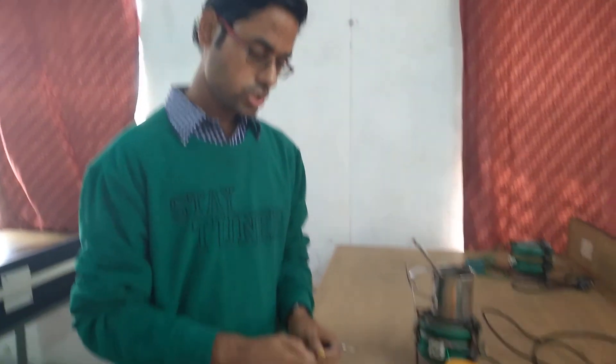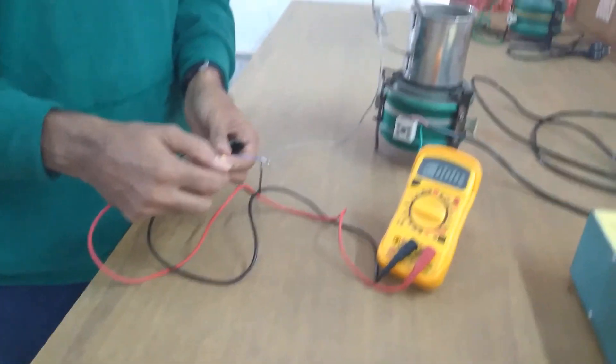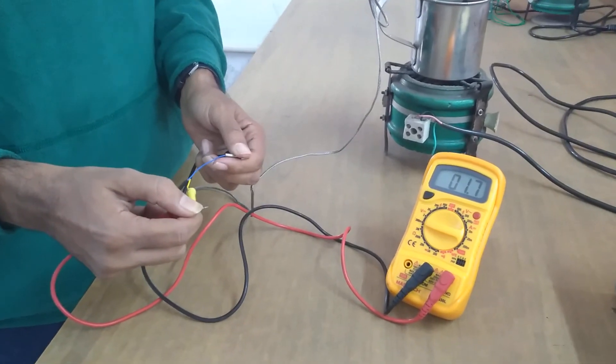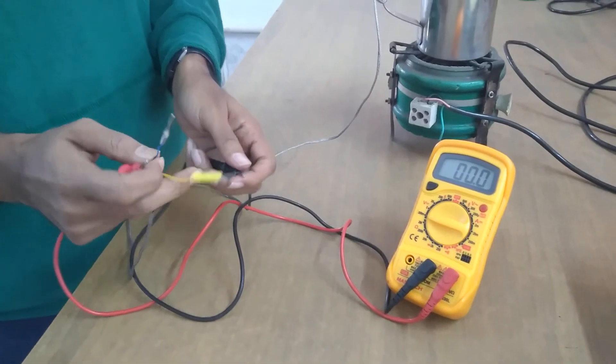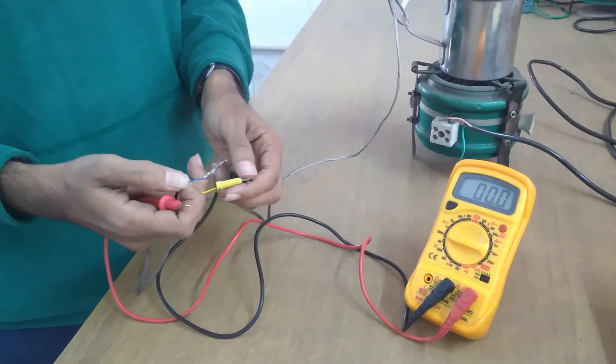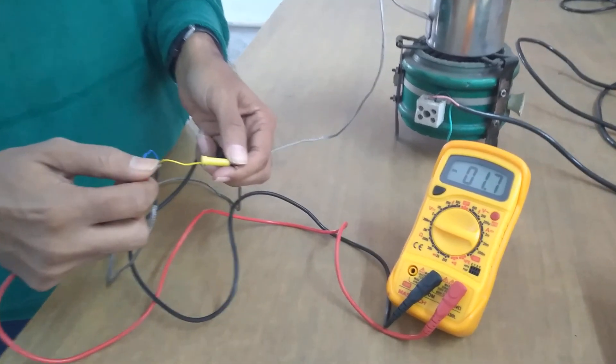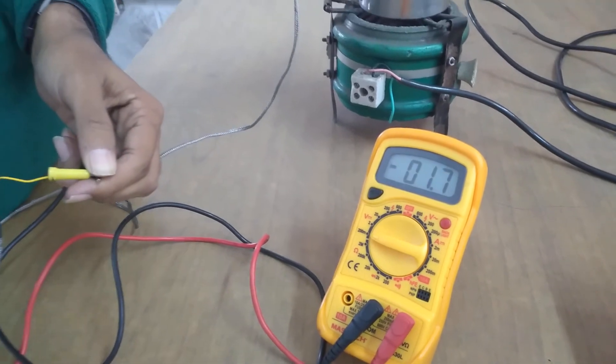Now we are going to demonstrate the polarity issue. So you can see that red to yellow and black to blue shows around 1.7 millivolts. Now if I flip the terminals, that means yellow to black and blue to red, you will find that the polarity also flips. This is minus 1.7 millivolts.